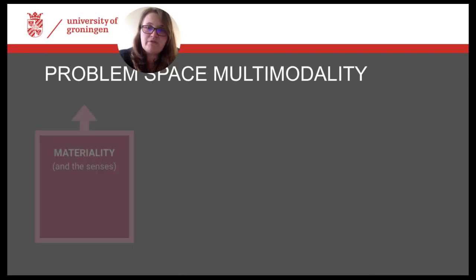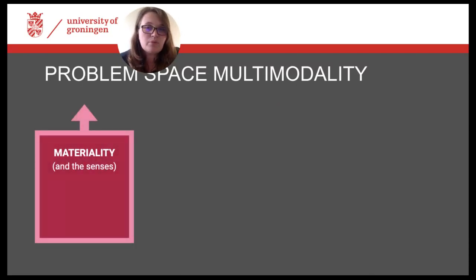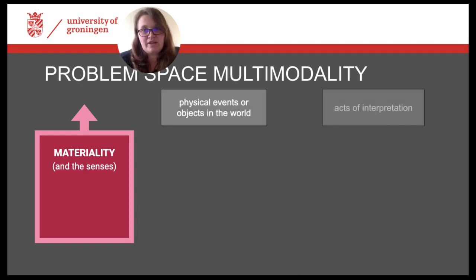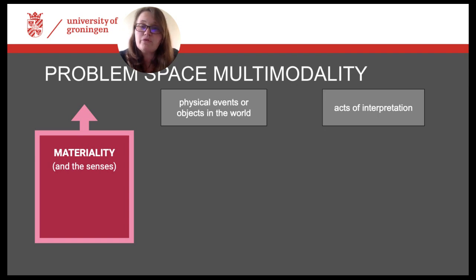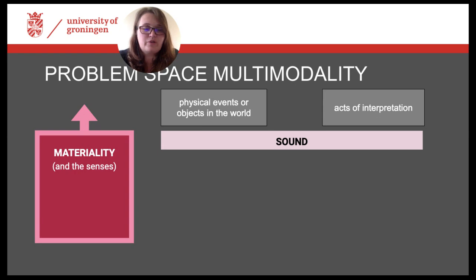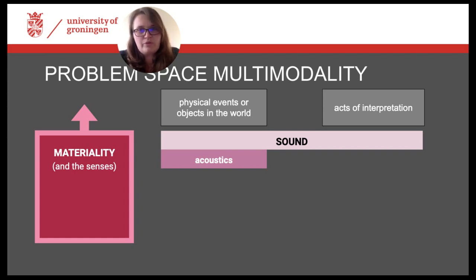Our first starting point is materiality. When dealing with material or materiality, we have to make a general distinction between something close to actual physical events or objects that can be identified in the world, and something that is more an act of interpretation beyond the physical. We can, for example, identify typical properties of sound on the level of acoustics — frequency, amplitude or wavelength — which we can also measure as longitudinal waves. However, sound is not just sound or the hearing of tones; it usually also gives us information about space, hardness, distance or direction, and thus constructs meanings with these parameters, which we can interpret based on regularities in our world.